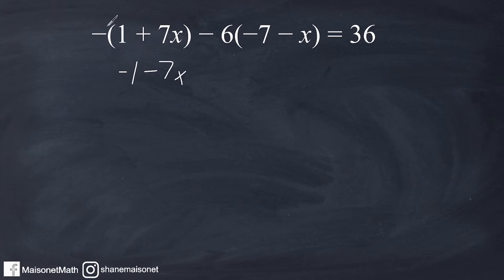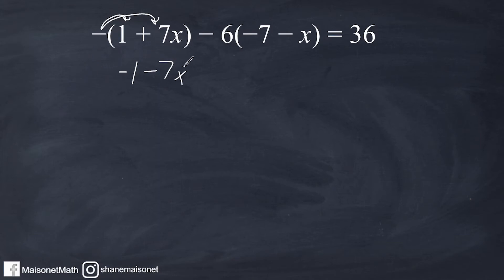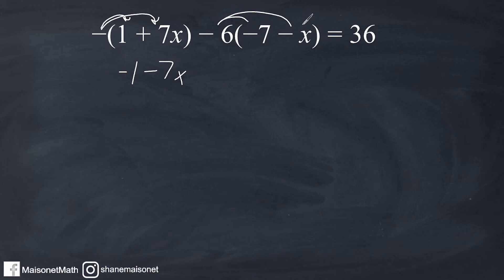This is because if you take a negative times a positive, that's always a negative. Or we can consider this negative as the word 'opposite' — the opposite of positive 1 is negative 1, the opposite of positive 7x is negative 7x. Now we kind of have the same thing with this part of our equation — we have a negative 6. So we're going to distribute this negative 6 to negative 7 and to negative x. And remember, if there is no coefficient in front of a variable, there actually is, and that coefficient is a 1. So we have negative 6 times negative 7, which is positive 42, and negative 6 times negative 1x, which is positive 6x.